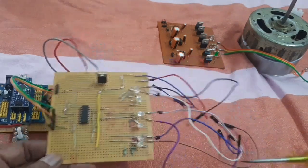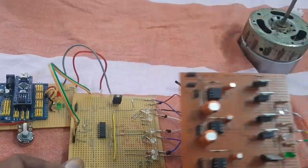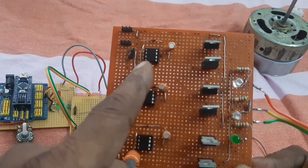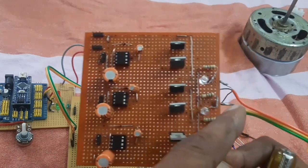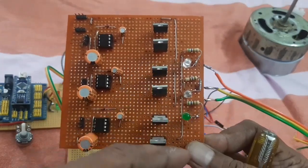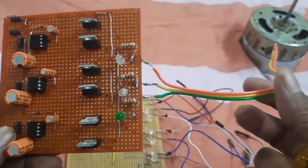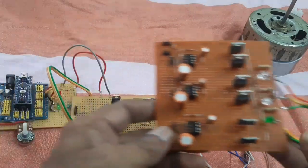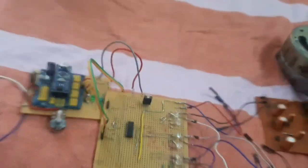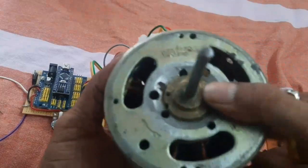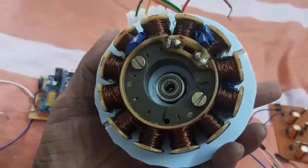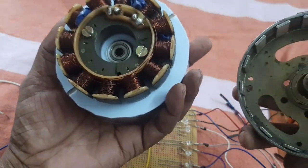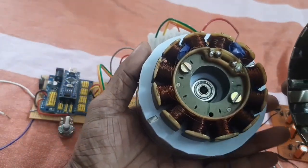The six signal is given to here this is the MOSFET drive using IR2104 and here this is the full bridge three-phase full bridge and the output of the MOSFET bridge is given to the BLDC motor. The BLDC 12-pole stator and 16-pole rotor.